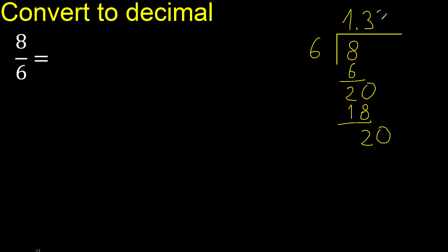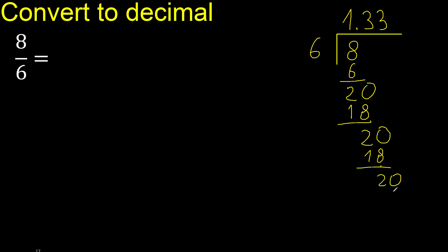We have 20 again. 6 multiplied by 3 is 18. Subtract. Complete. This repeats — therefore 3 repeats, therefore 3 repeats again.